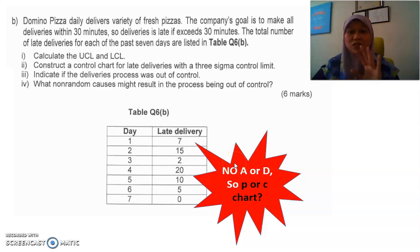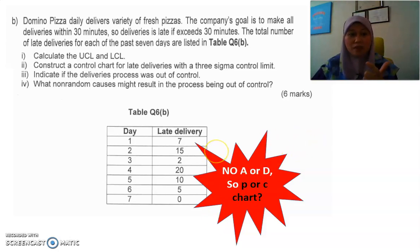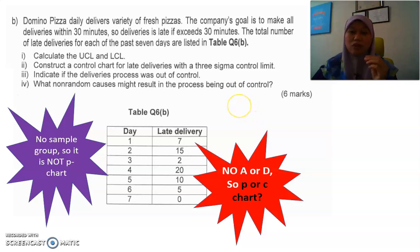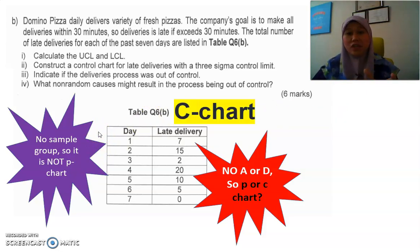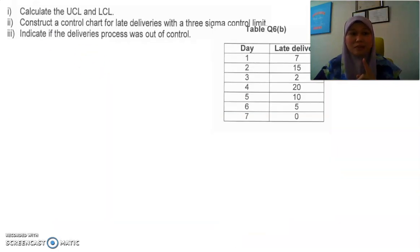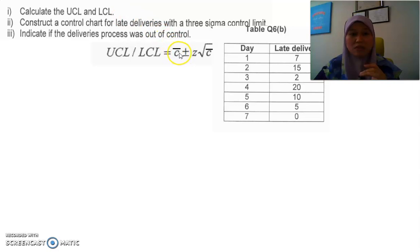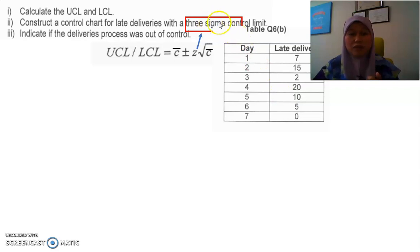Since there's no measurement involved, it's definitely not a variable chart — it's an attributes chart. We check whether it's a p-chart or c-chart. There is no sample group, so we don't use the p-chart. This is definitely a simple c-chart. The first step is to find the formula. Here are the formulas for the control chart: the upper control limit and the lower control limit. C-bar means the average of c.